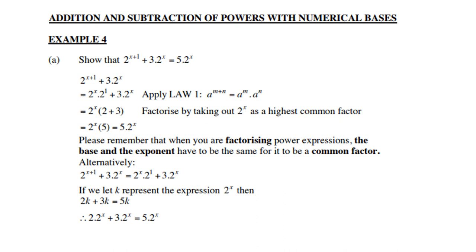Example 4: Show that 2 to the power x+1 plus 3 times 2 to the power x equals 5 times 2 to the power x. Let's start with the left-hand side. 2 to the power x+1, we undo the first law: 2 to the power x+1 comes from 2 to the power x times 2 to the power 1. Now you can see there is a common factor. 2 to the power x is common for both terms, so take it out as a common factor and you're left with 2 plus 3. 2 plus 3 is 5.